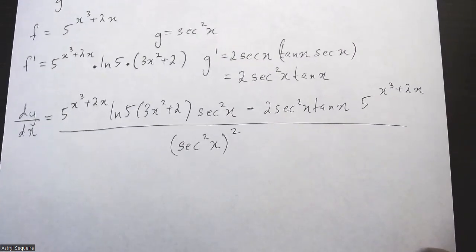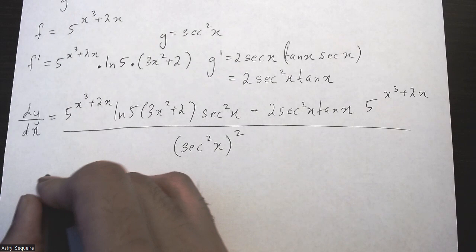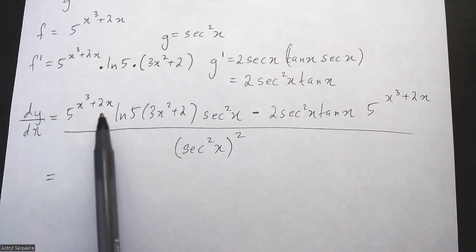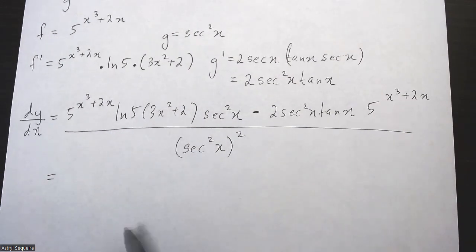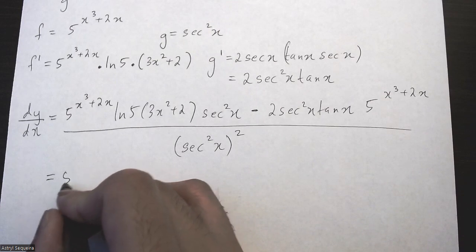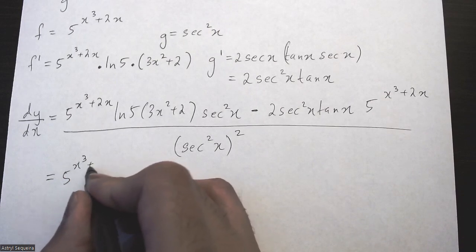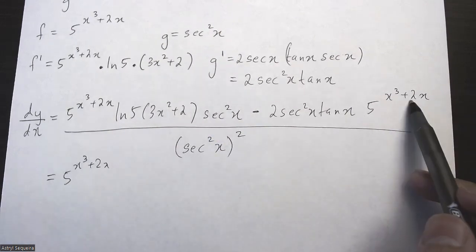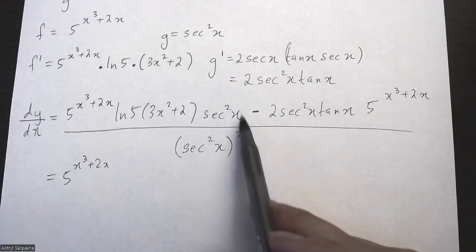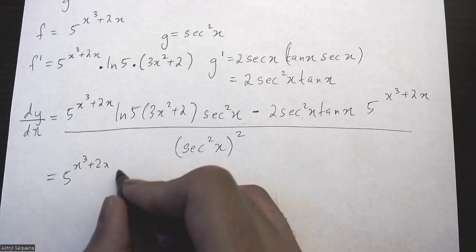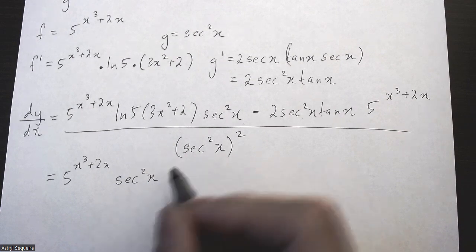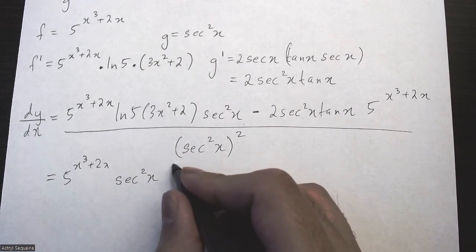Now this can be simplified. Let's start by common factoring the numerator. I can common factor out 5 to the x cubed plus 2x, because that's in both terms, and I can also factor out sec squared x.